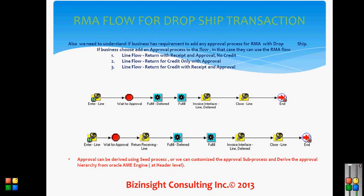Approval can be derived using the seeded process, or we can customize the approval sub-process and drive the approval hierarchy from the Oracle AME engine. If you want to know more about the AME engine, please refer to my post about AME. The rest of the RMA flow for the dropship will be covered in the next recording. Thank you.